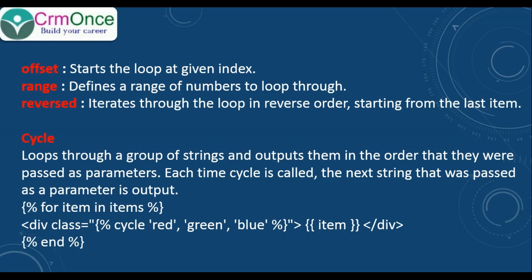For each cycle is called, the next string that was passed as a parameter is output. For example, in 'for item in items' you can see in the div class we are passing cycle red, green, blue. If you have five elements, the first item will be printed as red color, second item as green color, third item as blue, and the fourth item again it will start from red. That cycle - it's a cyclic loop that triggers until the number of items you have.